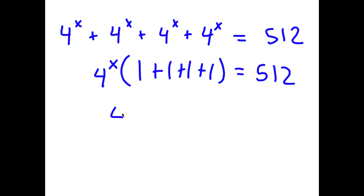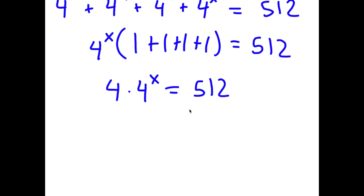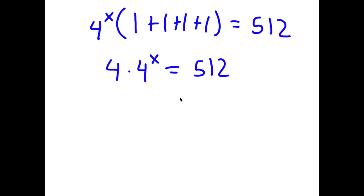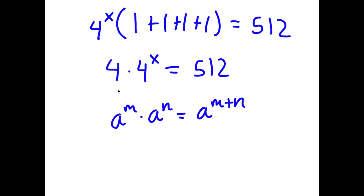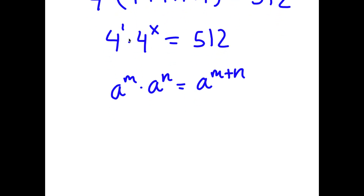Now if I simplify what's in the parentheses, I get 4 times 4 to the power of x is equal to 512. Now if I have something in the form a to the power of m times a to the power of n, this is equal to a to the power of m plus n. So 4 times 4 to the power of x — well, 4 is the same thing as 4 to the power of 1 — so 4 to the power of 1 times 4 to the power of x is equal to 4 to the power of x plus 1, and this is equal to 512.